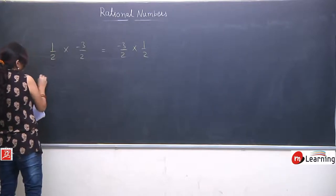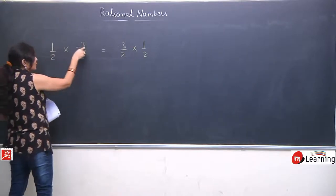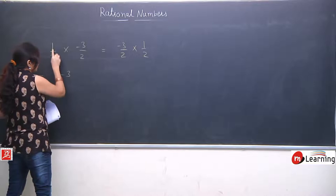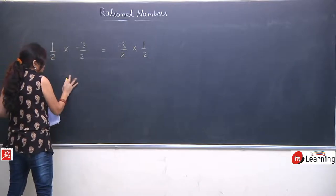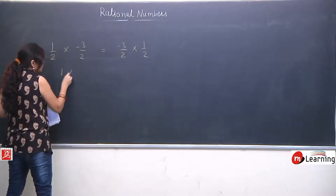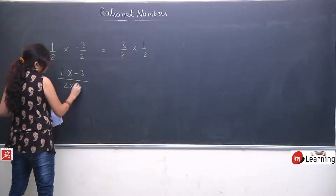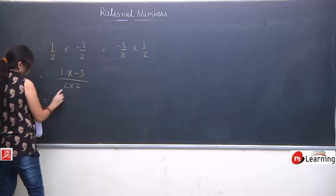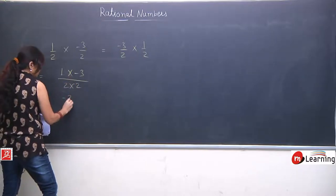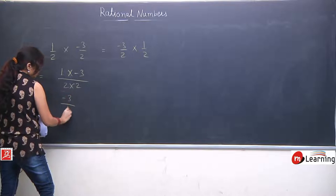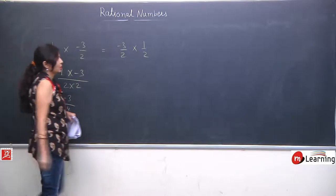In multiplication, what we generally do? Numerator will multiply to the numerator — 1 into minus 3 — upon denominator multiplied to the denominator, 2 into 2 is 4, giving minus 3 upon 4. This is our LHS.